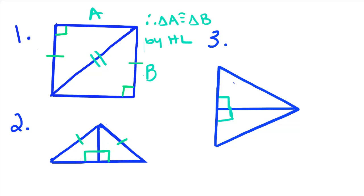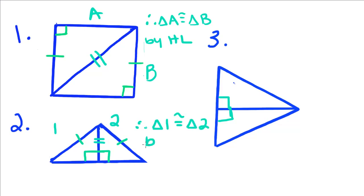For the second example, we have these two triangles. We know they're right triangles. Their hypotenuses are congruent, and they share this leg. Therefore, triangle 1 is congruent to triangle 2 by HL.